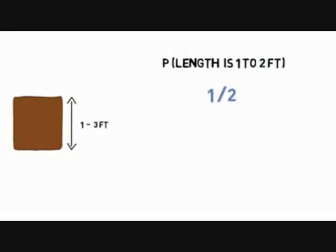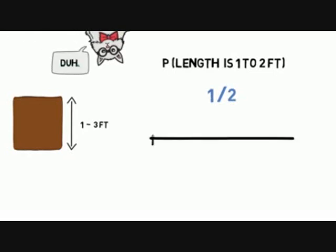Well, one half is the obvious answer. The range of possible lengths for the edges is one to three feet. Imagine a number line from one to three. The one to two range is half of that. So half of the possible lengths are between one and two feet.